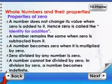Properties of 0. A number does not change its value when 0 is added to it. Hence, 0 is called the identity of addition. A number remains the same when 0 is subtracted from it. A number becomes 0 when it is multiplied by 0. 0 divided by any number is 0. A number cannot be divided by 0. In division by 0, a number becomes indefinite.